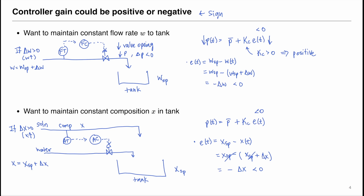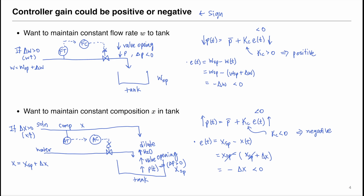Because the inlet composition increases, we want to dilute it with water to keep the tank composition constant. To dilute, we want to increase the water flow rate by increasing the valve opening, which means increasing the signal P — so ΔP > 0 and P should increase. Since P-bar is a constant, to increase P(t) we need Kc·E(t) to increase. Because E(t) < 0, to increase this term we must let Kc < 0, meaning the controller gain should be negative. We have now shown the controller gain can be positive or negative depending on the situation.